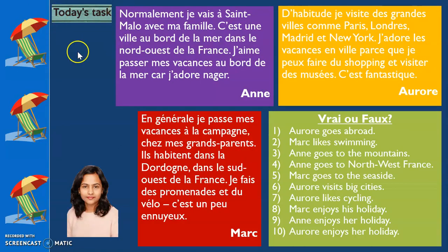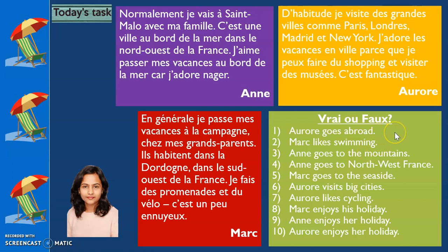We have come to our last task for today — a reading task. There are three different paragraphs. You will read them, understand what they mean, and answer ten questions: vrai ou faux — true or false. If it's true, write vrai; if it's false, write faux. The first paragraph is by Ann, the second by Ahror, and the third by Ma. This task will take at least 15 minutes. Pause the video here to complete your task.